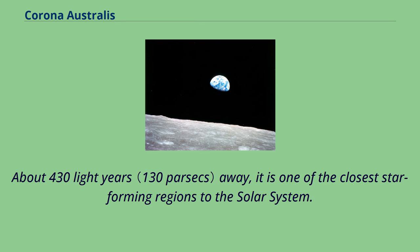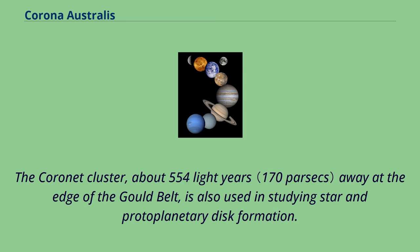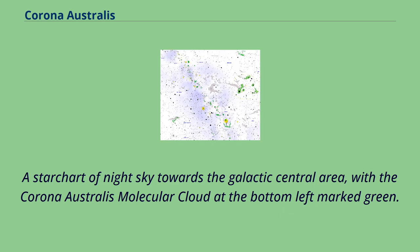The related NGC 6726 and 6727, along with unrelated NGC 6729, were first recorded by Johann Friedrich Julius Schmidt in 1865. The Coronet Cluster, about 554 light-years away at the edge of the Gould Belt, is also used in studying star and protoplanetary disk formation. A star chart of the night sky towards the galactic central area, with the Corona Australis Molecular Cloud at the bottom left, is marked in green.